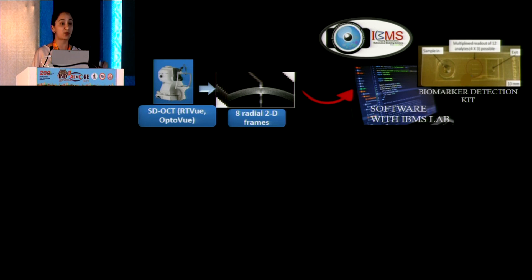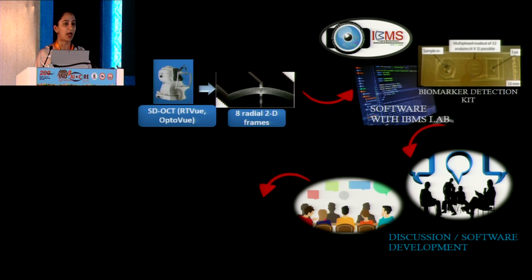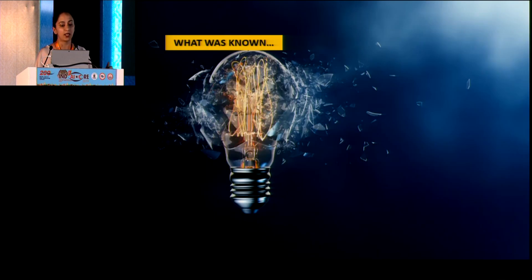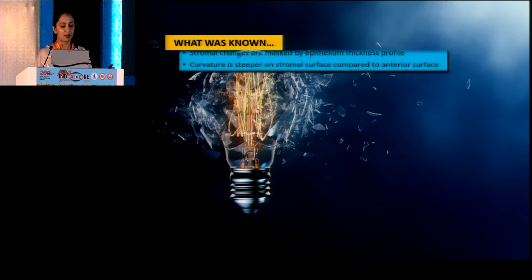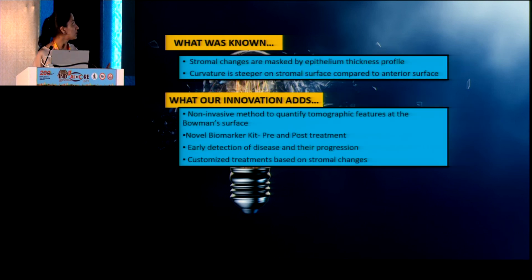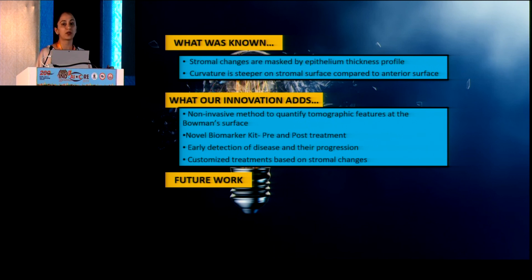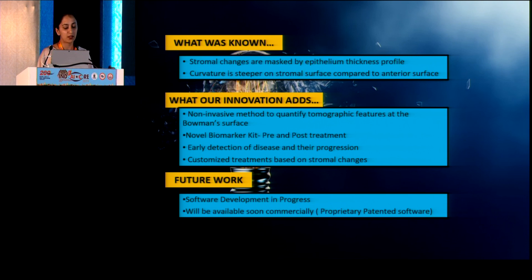Where we are now: we have the software and are in discussion with companies, also trying to develop a biomarker kit — combining the molecular pathway aspect and the mathematics to better pre-plan our patients. We're trying to develop an easy plug-and-play software and a handy kit for use in our workplaces and clinics. In summary, our innovation provides a novel non-invasive method of looking at the stromal surface, with an add-on of molecular analysis through a kit. Thank you.